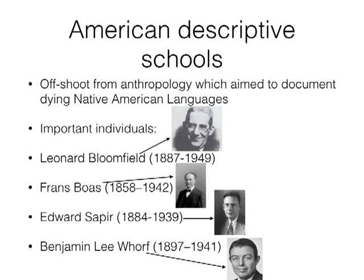Other schools include the American School of Linguistics, whose main figures are Leonard Bloomfield, Franz Boas, Edward Sapir, and Benjamin Lee Whorf. You may have heard of the Sapir-Whorf hypothesis — which deals with the relationship between language and thought: does language impact thought, or does thought impact language? Sapir worked with Native American languages, and together with Whorf he is described as a mentalist because of their focus on the relationship between thinking and language.